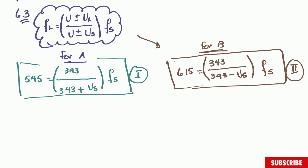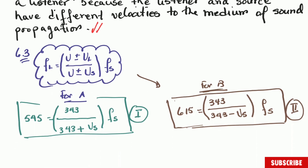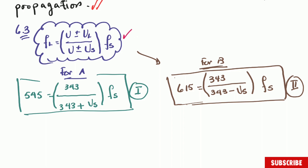Now let me show you the secret of the marking. This question was worth seven marks. One mark is for writing the formula. One mark for substituting the frequency detected by observer A, and one for observer B — that's three marks. One mark for all the substitution on the A side, and one for the B side — that's five marks out of seven, which you can get even if you cannot finish the question.